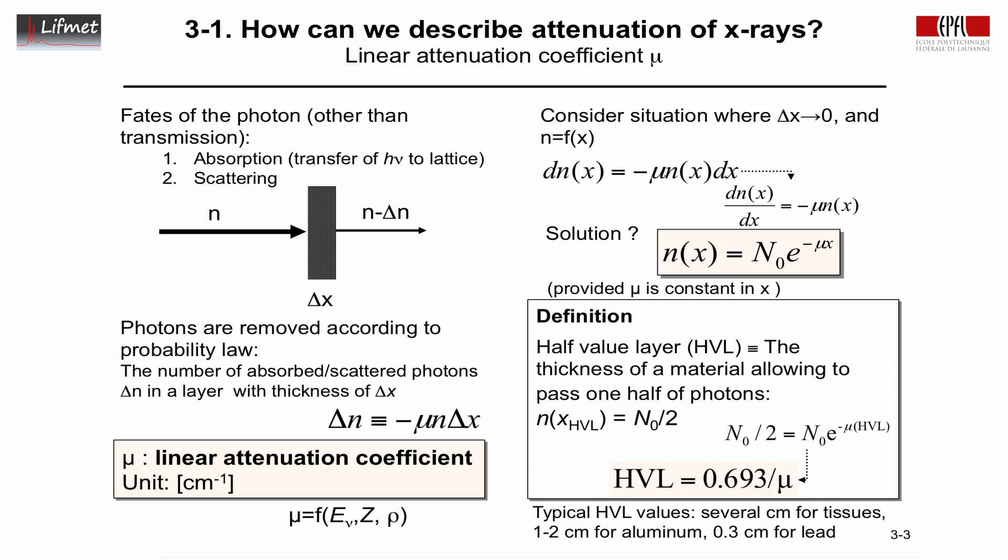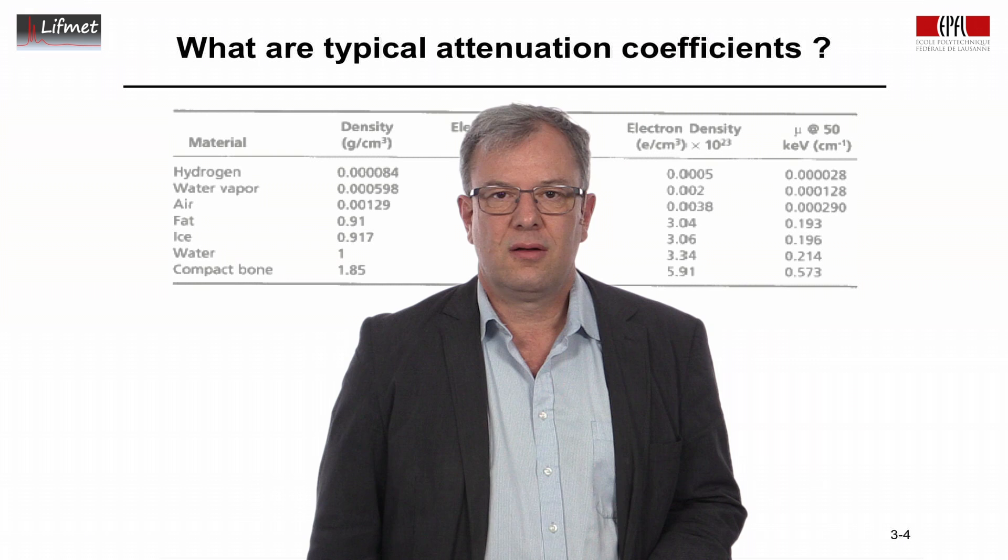And so, what are typical half-value layers here? They are given, typically for tissues, it's several centimeters. It depends on the X-ray that's being used. For aluminum, it's on the order of 1 to 2 centimeters, and 3 millimeters for lead, 0.3 centimeters here.